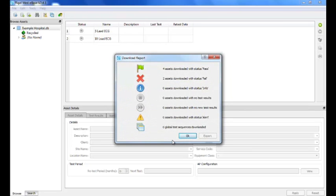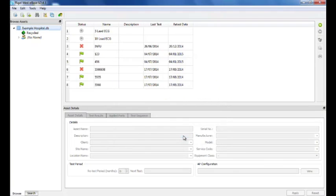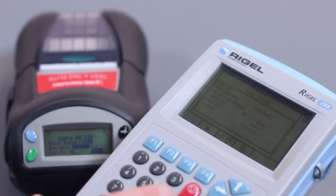When printed results are required on the spot, the Rigel 288 can communicate with a battery-powered and wireless printer.